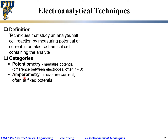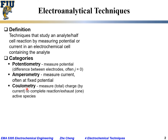The second category is amperometry. 'Ampere' means current, so amperometry measures current, quite often at a fixed potential. The third is coulometry — 'coulomb' is a unit for charge, so this measures total charge. You measure charge by integrating current with respect to time to get total charge, measuring the charge required to complete a reaction or exhaust one active electrochemical species.